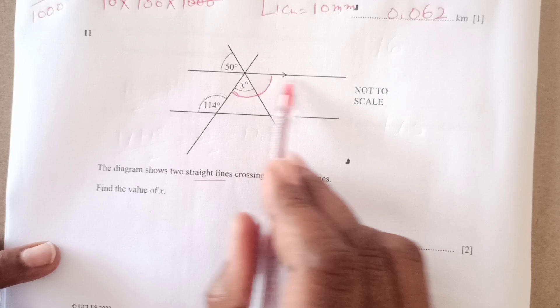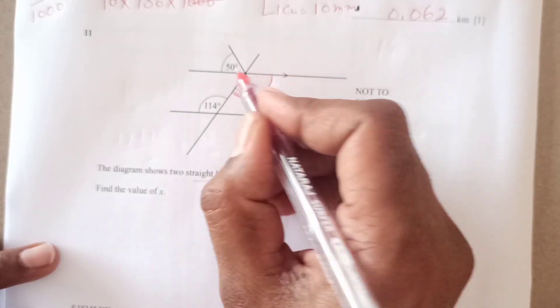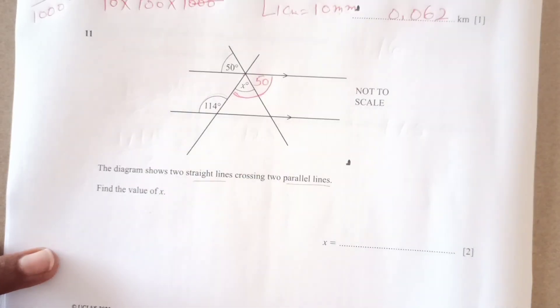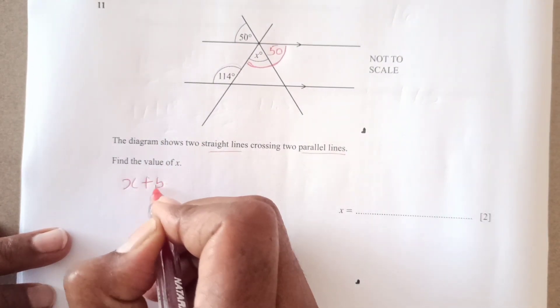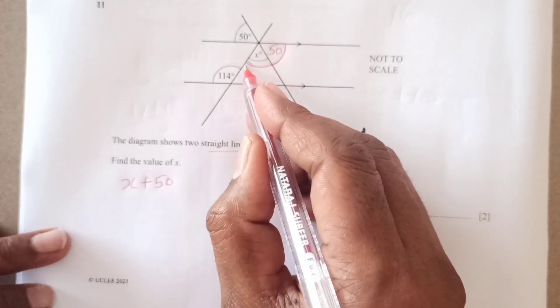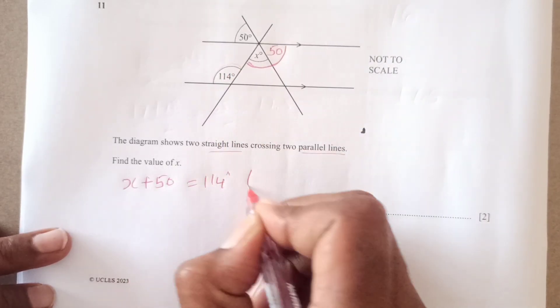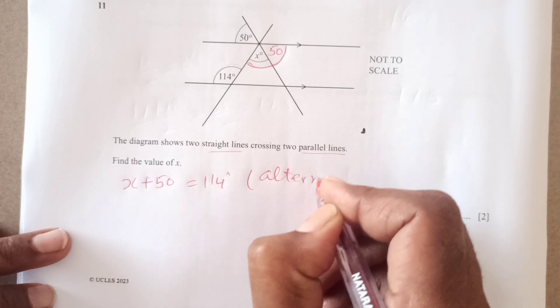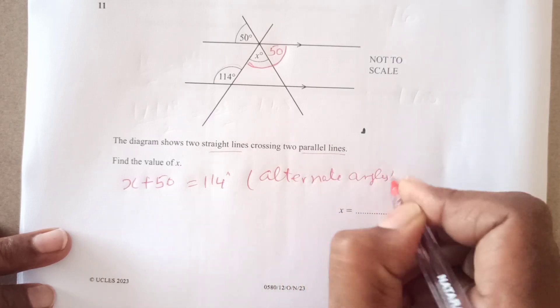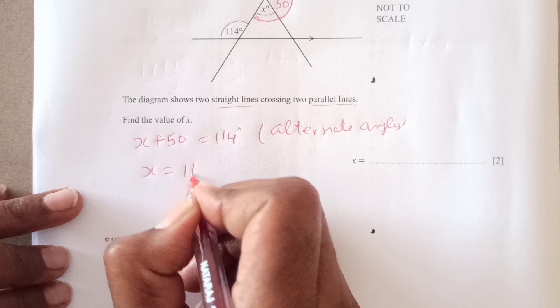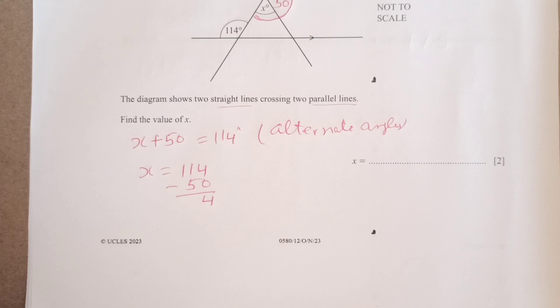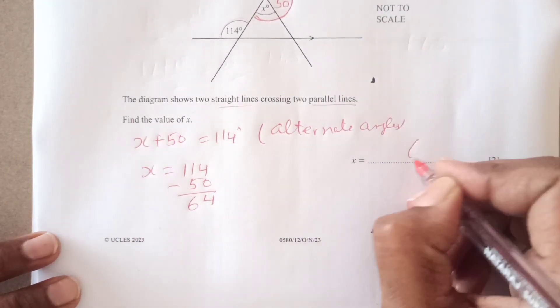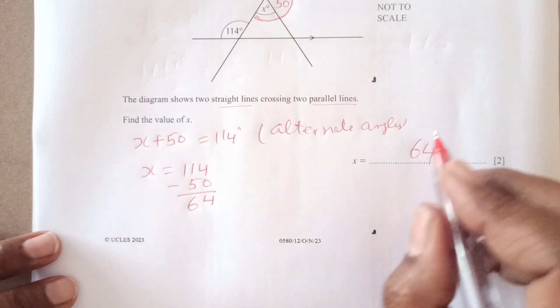But if you see this line and this line they cross, so that means this angle is going to be 50, okay? Vertically opposite angles. Then x plus 50, this plus this is equal to 114 because they are alternate angles, right? So x is 114 minus 50, 64. Okay?